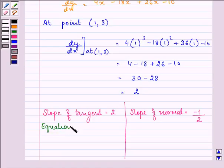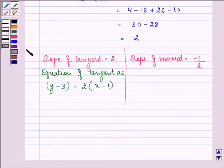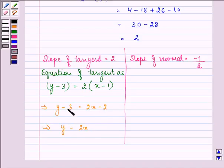So we have equation of tangent as y minus y1, which is 3, equal to m, that is the slope, x minus x1, that is 1. So we have y minus 3 equal to 2x minus 1, which gives us y is equal to 2x minus 2 plus 3, giving us y = 2x + 1.